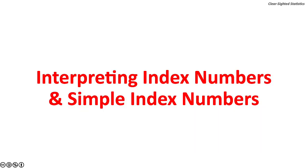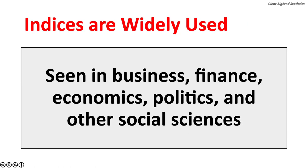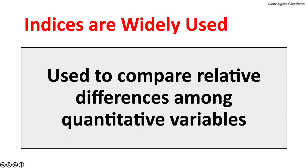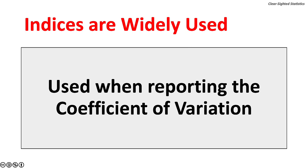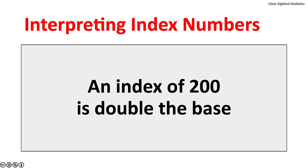Index numbers were invented in 1764 by the Italian economist Giovanni Rinaldo, the Count of Carli. He used index numbers to compare the price of grain, wine, and oil for a 250-year period. Indices are widely used in business, finance, economics, politics, and other social sciences. They are used to compare relative differences among quantitative variables, often when reporting the coefficient of variation, and when calculating the geometric mean whenever data contain negative numbers.